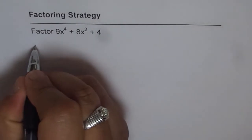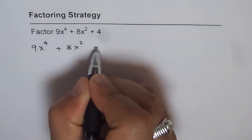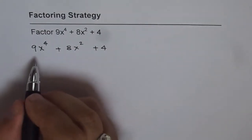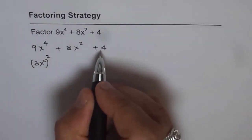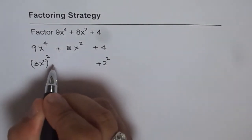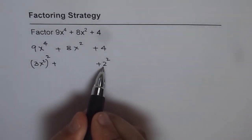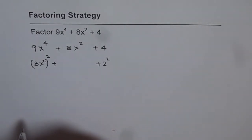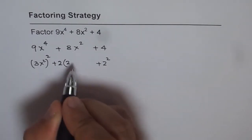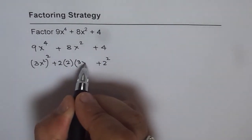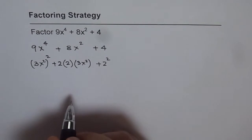Let us rewrite the question: 9x to the power of 4 plus 8x squared plus 4. As you notice, 9x to the power of 4 could be written as 3x squared, whole squared, and 4 is 2 squared. If somehow I can make the center term twice these two, then I have a perfect square. That is to say, if I have a term which is twice 2 times 3x squared, then I can factor this as a perfect square.